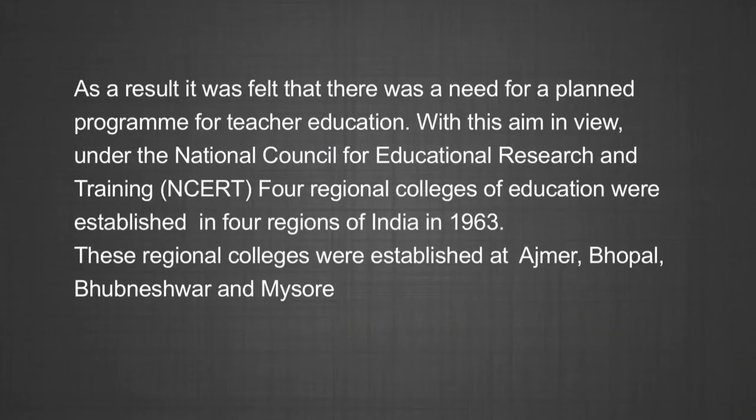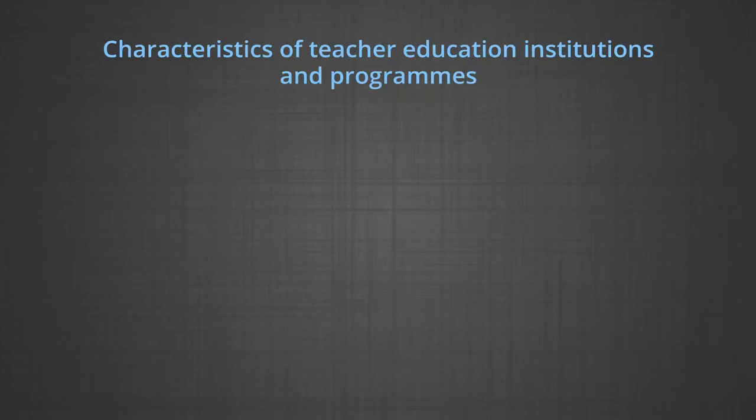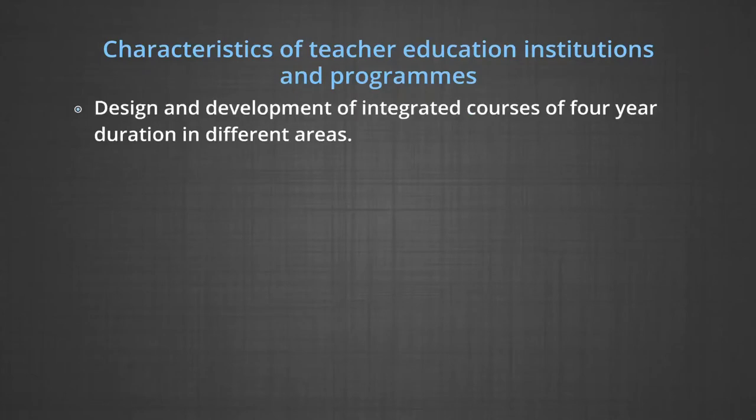As a result, it was felt there was a need for a planned program of teacher education. Under the National Council of Education Research and Training (NCERT), four Regional Colleges of Education were established in four regions of India in 1963 — at Ajmer, Bhopal, Bhubaneswar, and Mysore. More recently, another college was established at Shillong, known as the Northeastern Regional Institute of Education, catering to the needs of the seven northeastern states. Characteristics of these teacher education institutions include design and development of integrated courses of four-year duration in different areas.